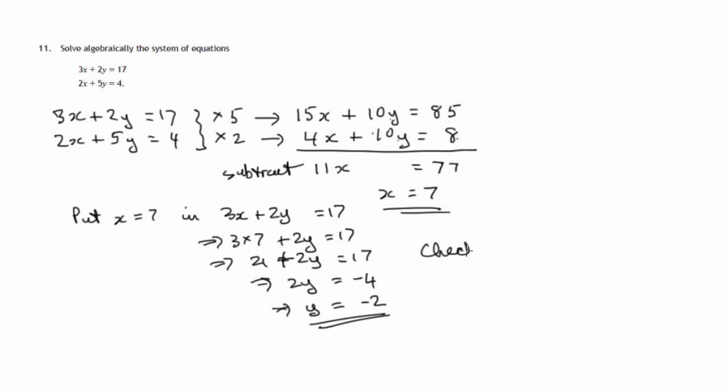And again, we can check, using the equation that we didn't use, 2x plus 5y, check that 2 lots of 7 plus 5 lots of negative 2 is equal to 4. So there's 14, that's minus 10, and that does give us 4.